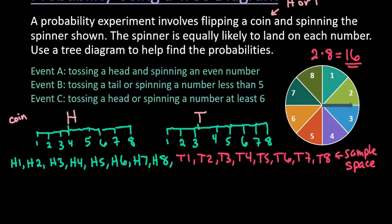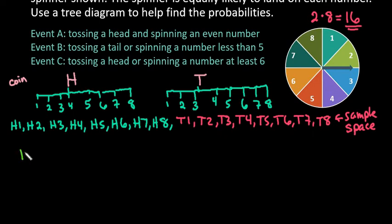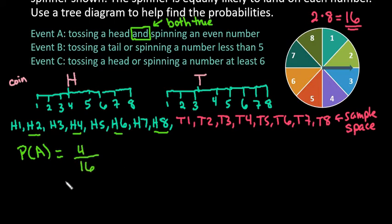We're going to look for the probability of each of these events. The probability of event A can be written as P(A), which equals tossing a head and spinning an even number. That means both have to be true, so anytime you see 'and' both have to be true. We would go through our heads and see how many times we got an even number. I got a head with a 2, 4, 6, or an 8, so that happened 4 times out of 16 possible scenarios.